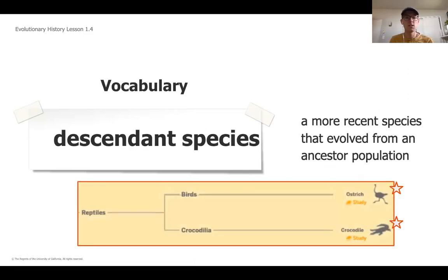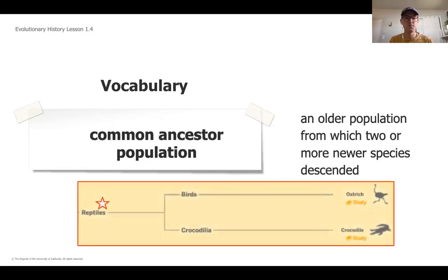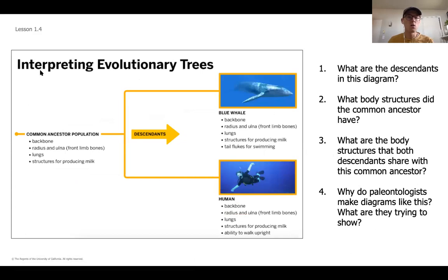So those are two terms that we're going to want to be making sure that we're thinking through today. Again, we've got descendant species and common ancestors. We're going to go back to the diagram from our 1.3 reading, and we're going to take a closer look now that we know those two terms, descendants and common ancestor populations.